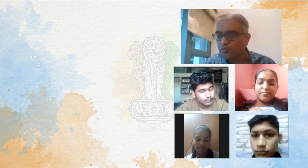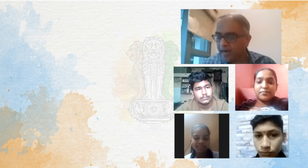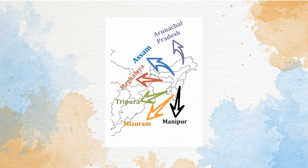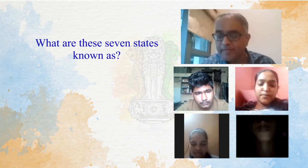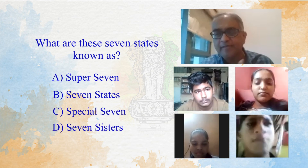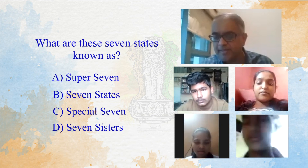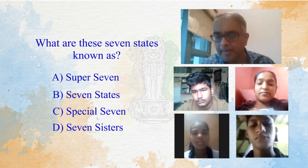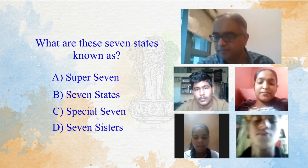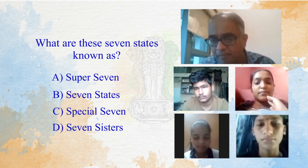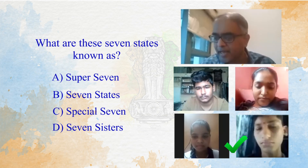The last question goes to team Swadesh, Sneha and Nishant. You see a picture of some northeastern states of India. The question is: what are these seven states known as? As Super Seven, Seven States, Special Seven, or the Seven Sisters of India? Nishant answered: Seven Sisters. Seven Sisters is the right answer — you got it right.